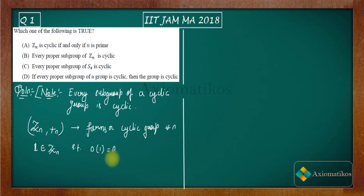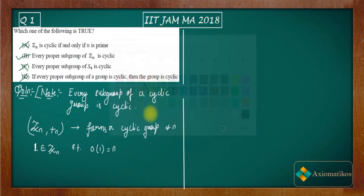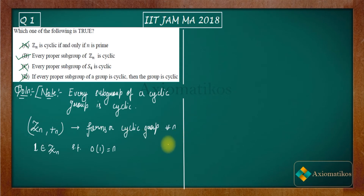Since Zn is a cyclic group, every subgroup of a cyclic group is cyclic, therefore every proper subgroup of Zn is cyclic. So B is correct, A is incorrect, C is incorrect, and D is incorrect. The two key facts used: every subgroup of a cyclic group is cyclic, and Zn under addition modulo n is cyclic for every n in the natural numbers.